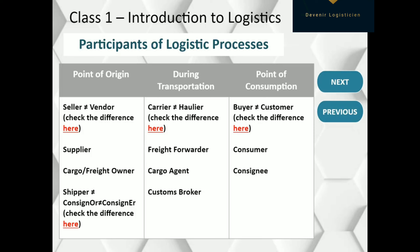Freight forwarder is a person or company that organizes shipments for individuals or corporations to get goods from the manufacturer to a market, customer, or final port of distribution. In Russia, this person is called expediter. Cargo agent is грузовой агент, and this person makes sure that shipments are picked up and delivered on time, paperwork is completed, and fees are collected.